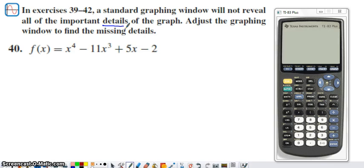The important details of a graph would be x-intercepts, y-intercepts, maxes, mins, and asymptotes. So we're just going to want to make sure we see all the important pieces of a graph before we are satisfied with the picture the calculator is showing us. We're going to have to try to adjust the graphing window to find the missing details.